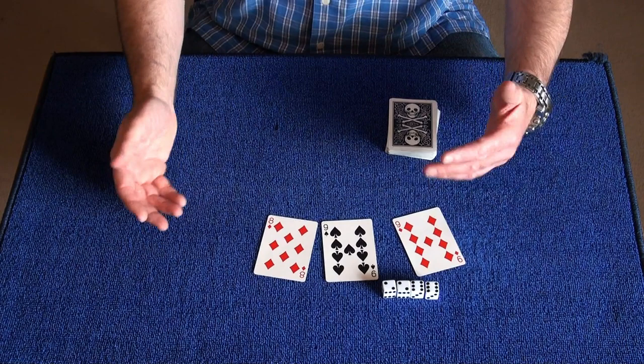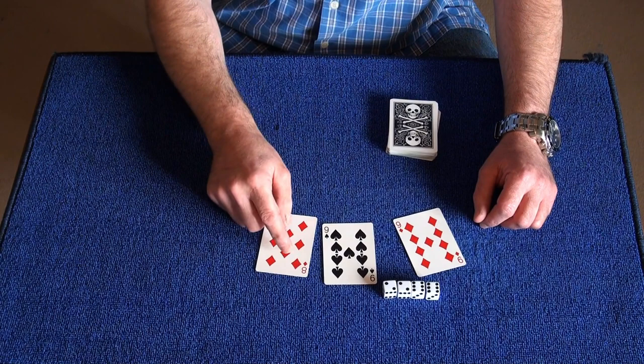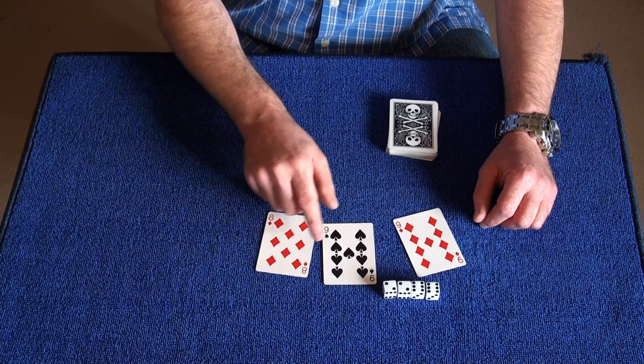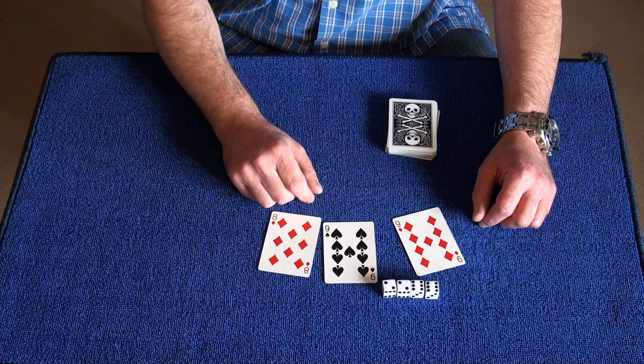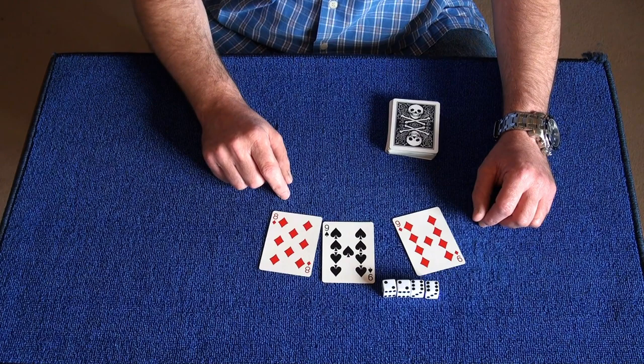So if we did it the other way around, and we used the 8 and the spade, and we went for the 8 of spades instead. And we'd add the two numbers together again, which would get a 17, 9 and 8 is 17. So wouldn't it be amazing if the 8 of spades is in the 17th position in this deck. Let's just have a look.